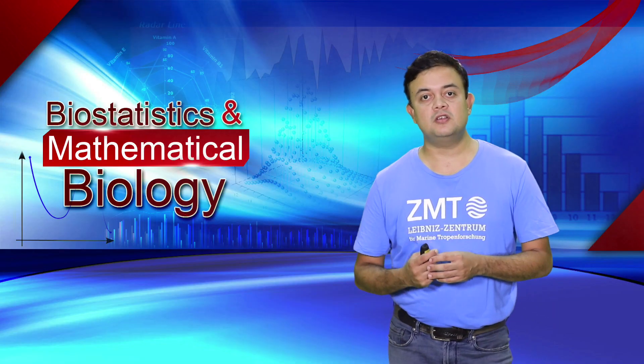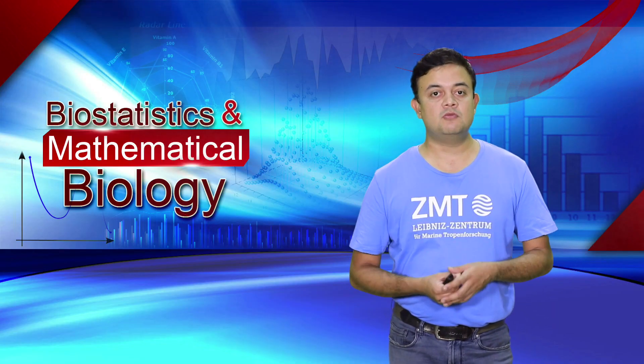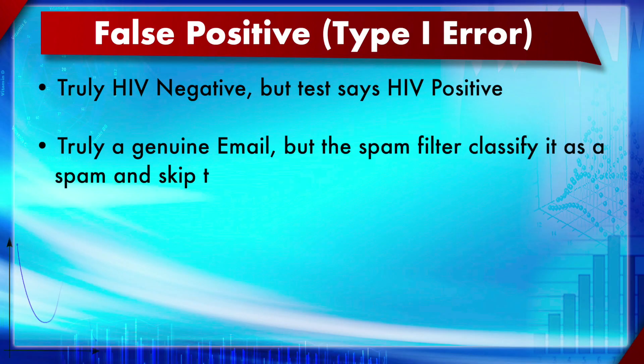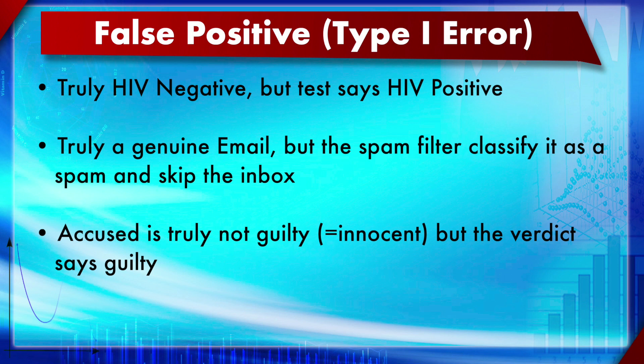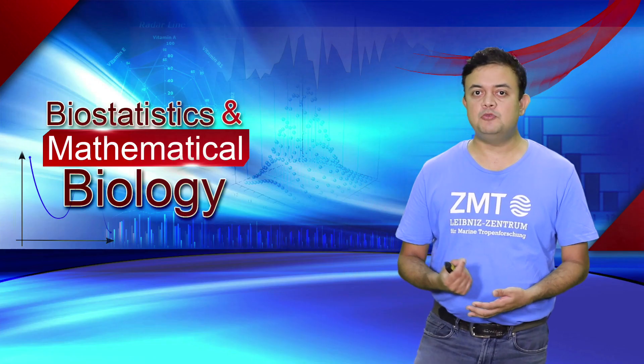Some examples of false positive: a person who is truly HIV negative goes for a test and the test says HIV positive — that is a false positive. For email, a genuine email is classified by your spam filter as spam and skips the inbox — that is also a false positive. Another example: an accused is truly not guilty, innocent and did not commit any crime, but the verdict says guilty — again, that is a false positive.